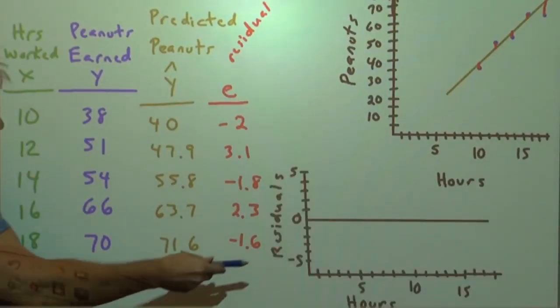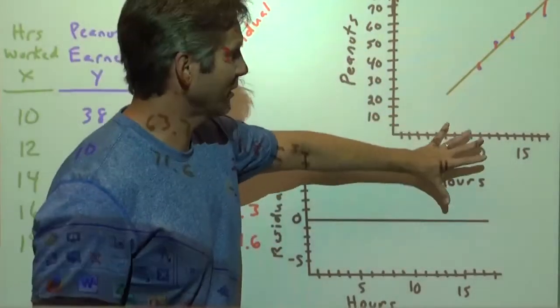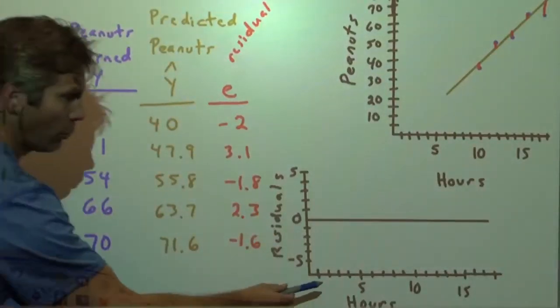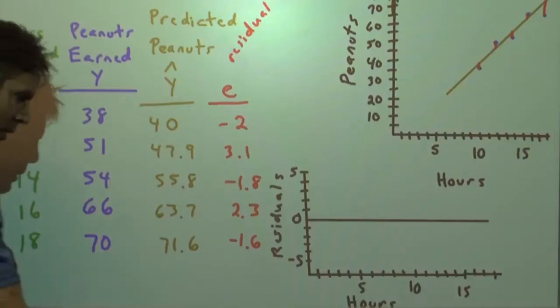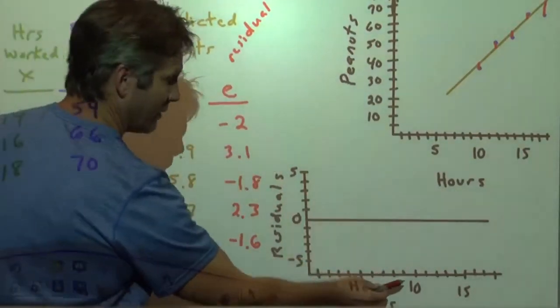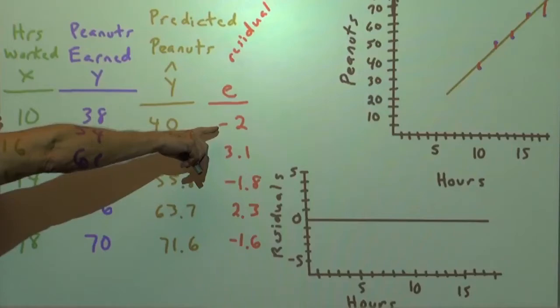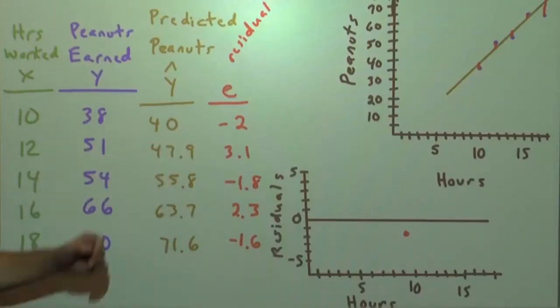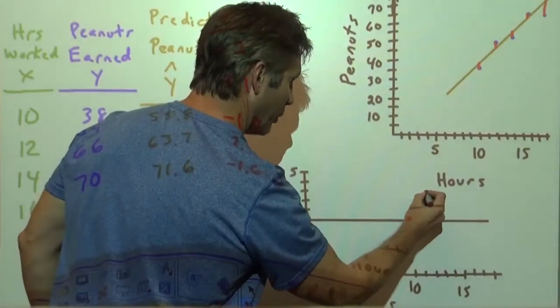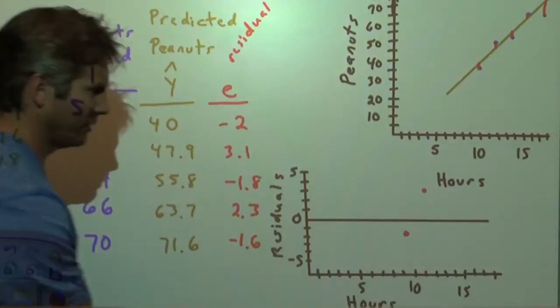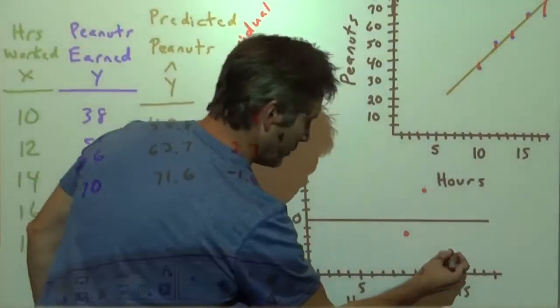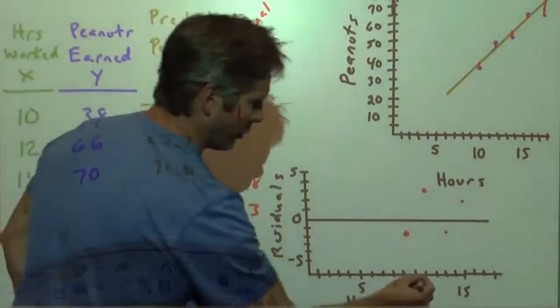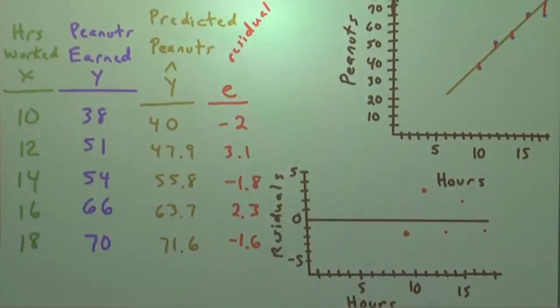What we're going to be able to do is come up with a residual plot. We have a scatter plot where X is paired up with its output, the number of peanuts, the Y values. Or a residual plot where X is being matched with its residuals. When we had 10 hours, our residual was negative 2. So at 10, we go to negative 2 on the axis. At 12, it was 3.1. Our observed value was 3.1 units above the predicted value. Then we had a residual of negative 1.8, then a residual of 2.3, and then a residual of negative 1.6. So there it is. A residual plot would look like that.